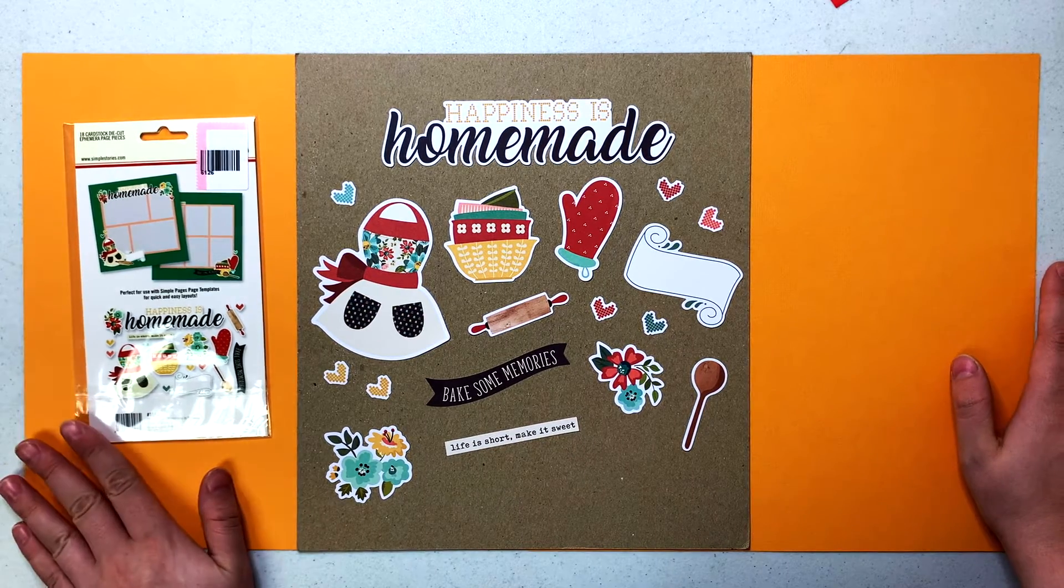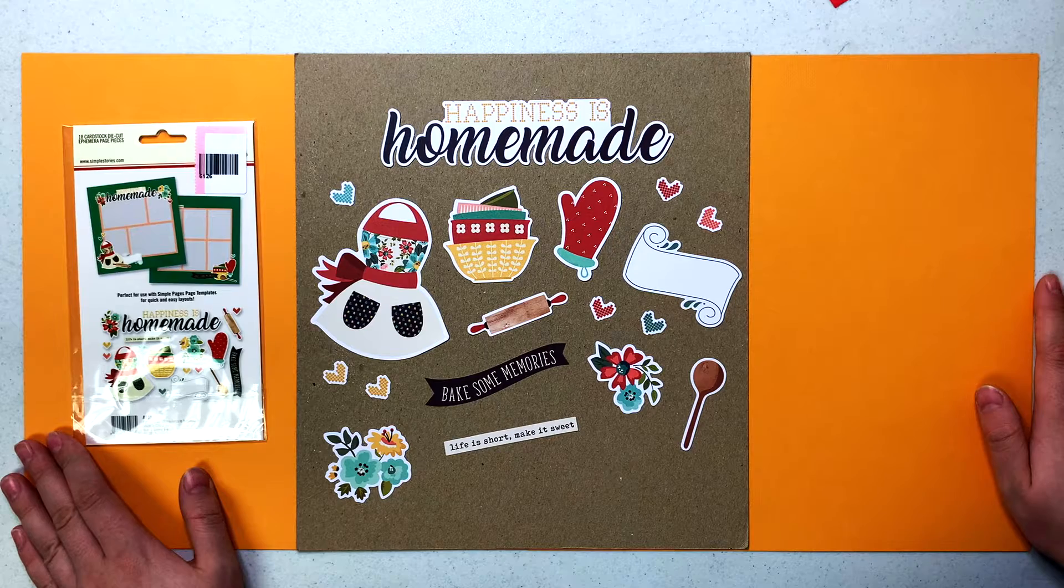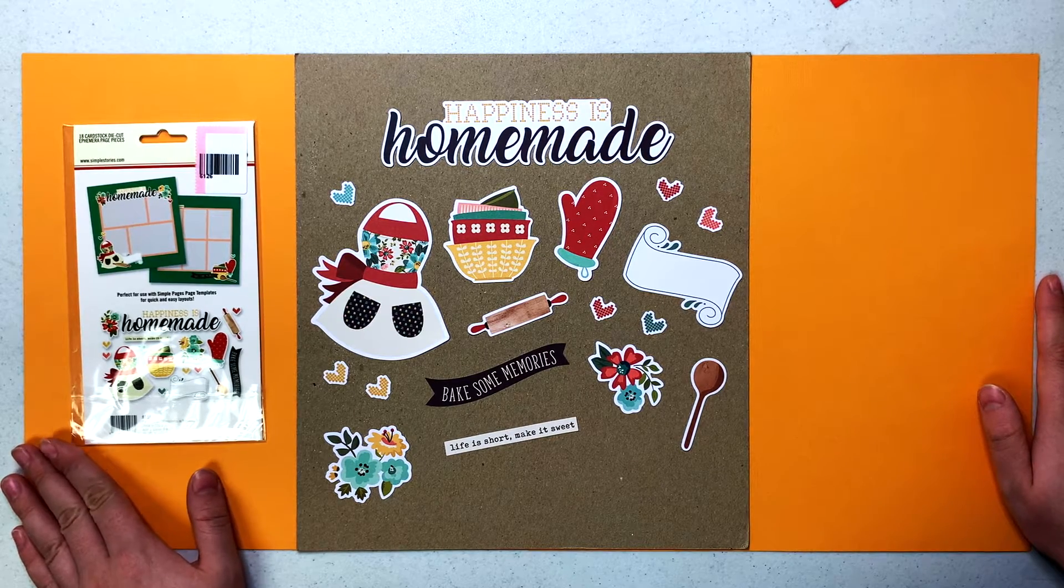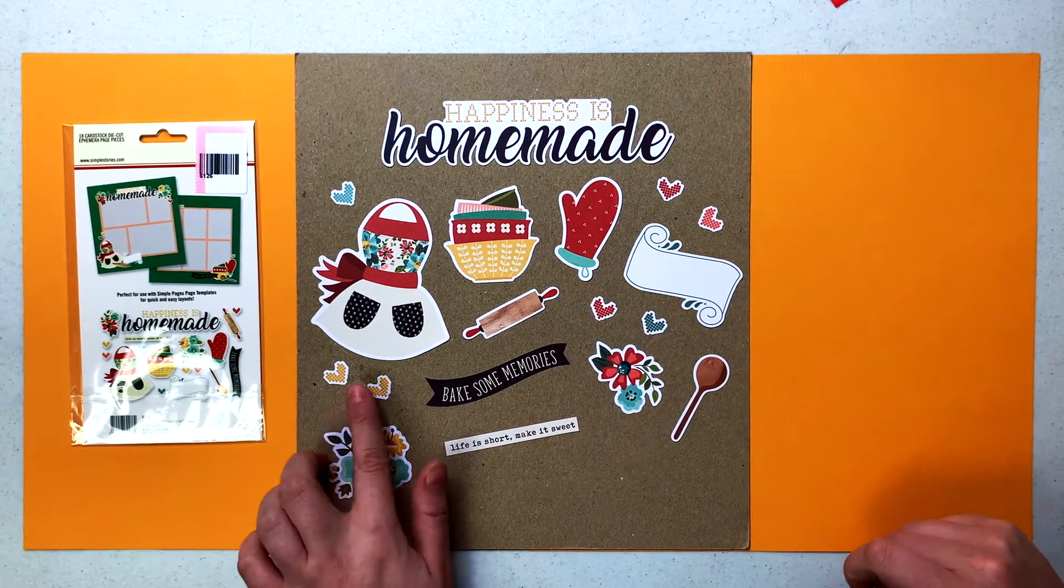Today I picked the Happiness is Homemade page pieces set. This is an 18 cardstock die cut set with some absolutely gorgeous pieces in this one. You guys look at all of these cute little baking items.